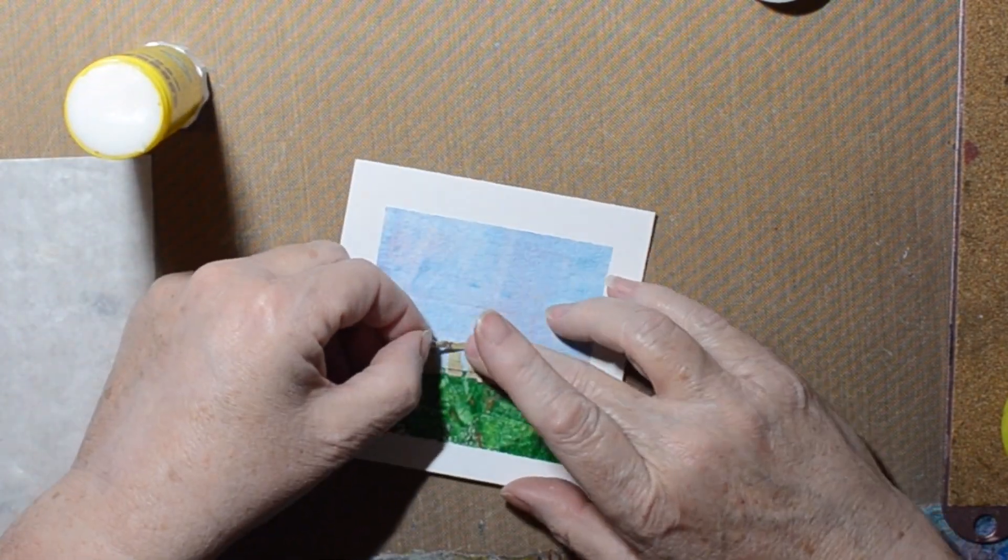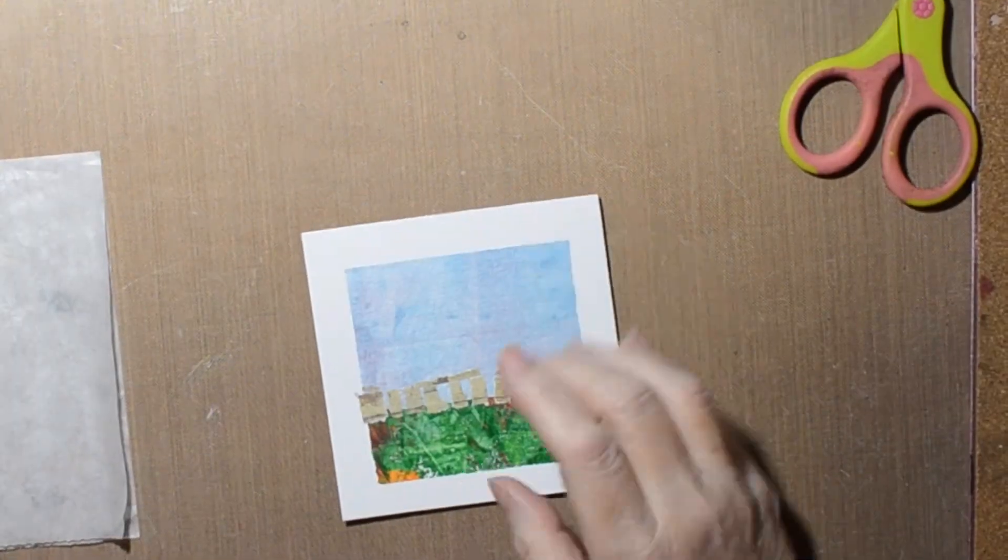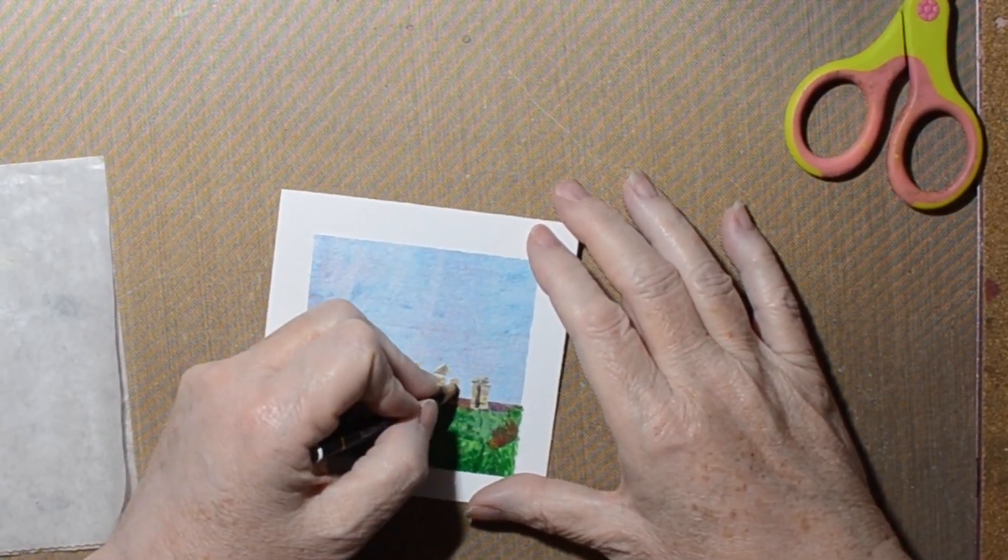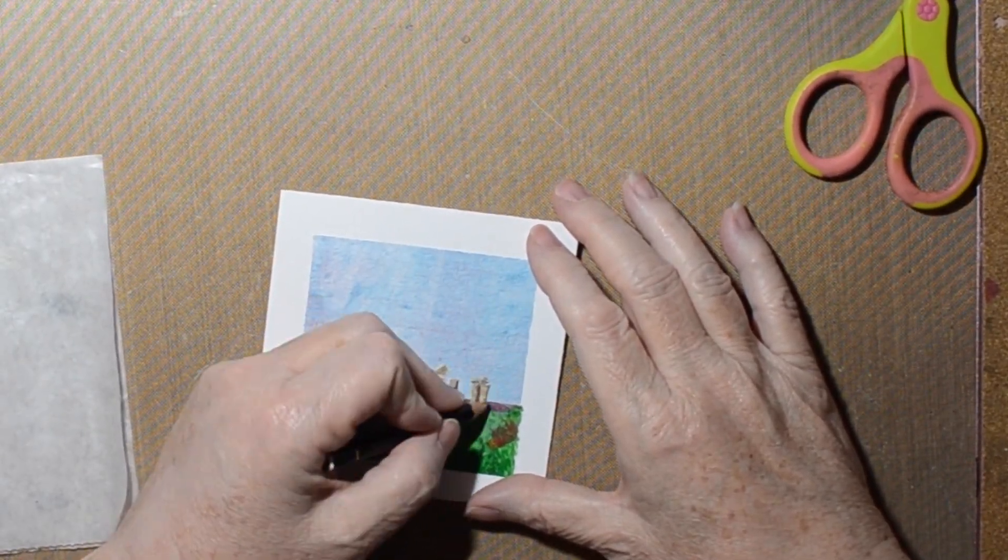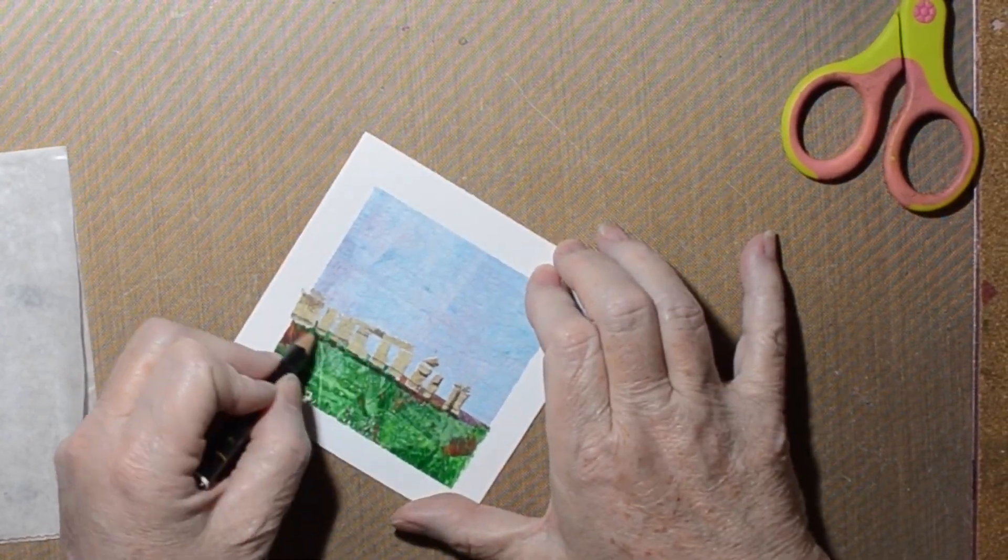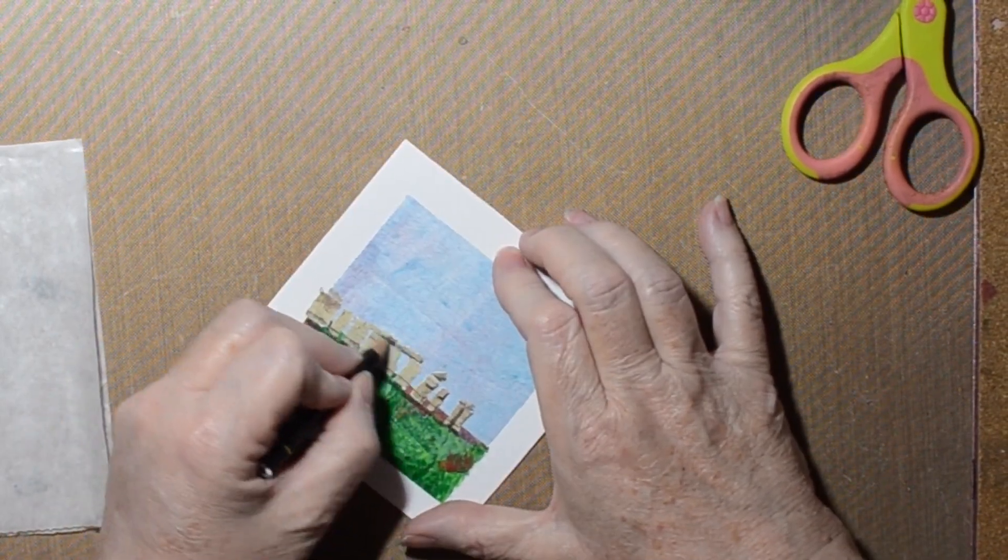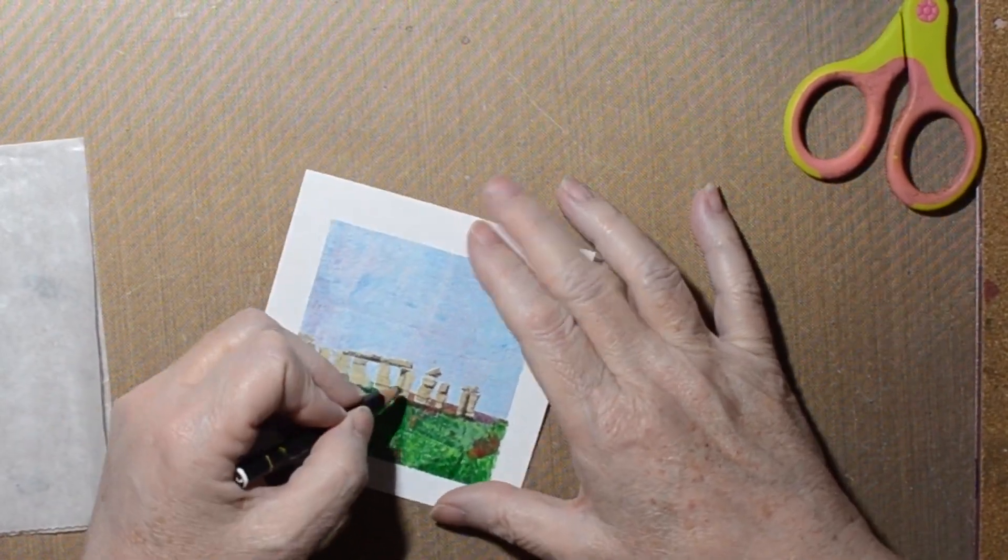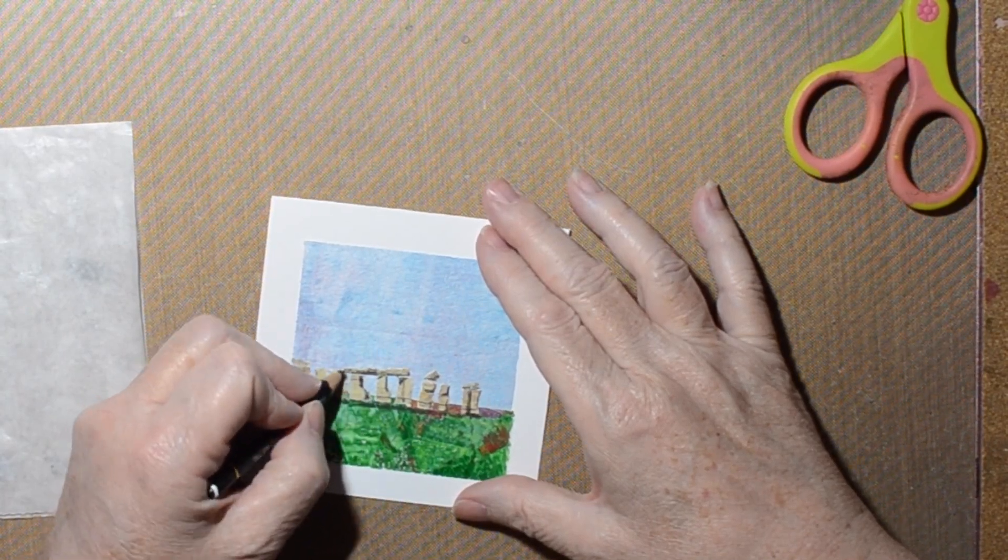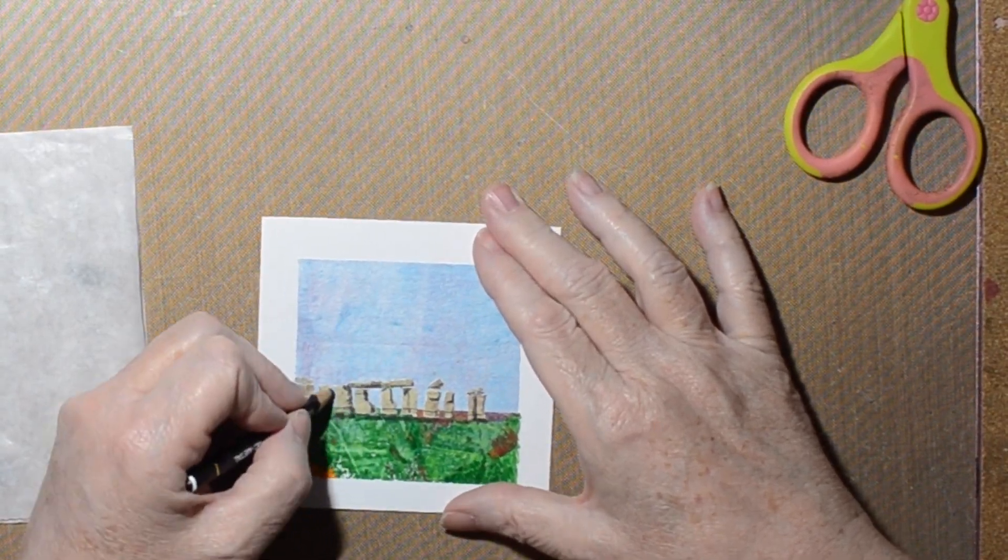And my Stonehenge goes off the page. There's some rocks that are balancing on top. There we go. I'm just adding my shading, trying to make them look like rocks. Or stones. I guess if they're big, they're stones. I don't know. Big stones.